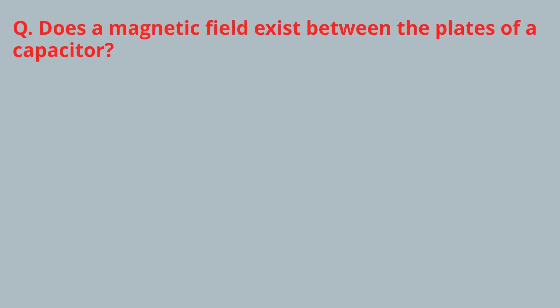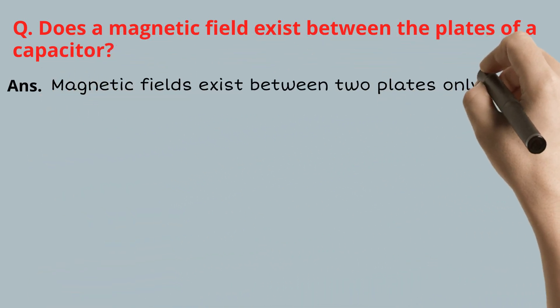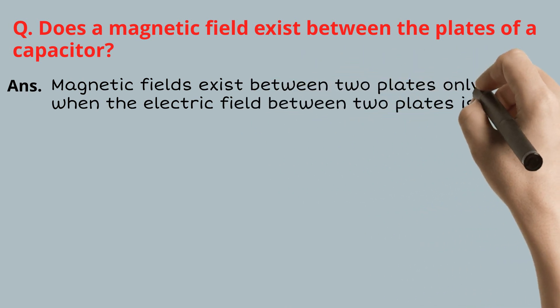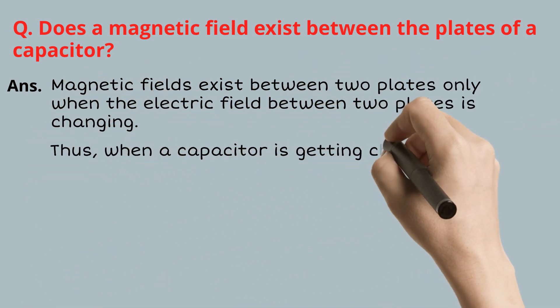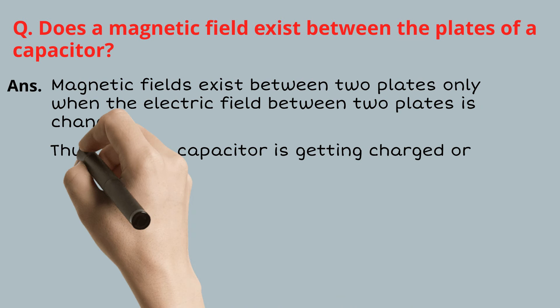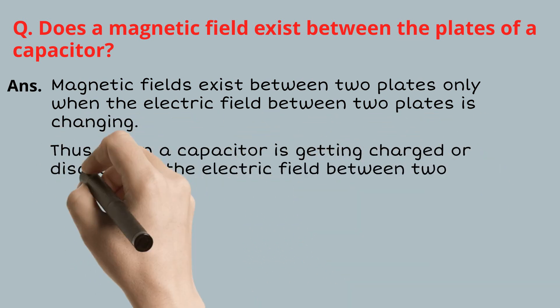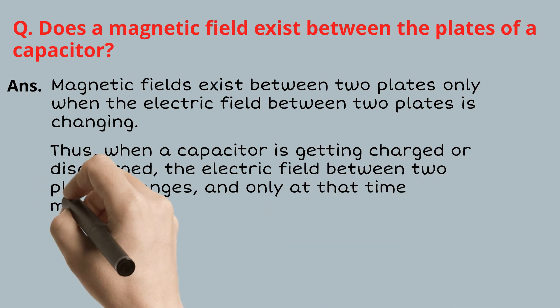FAQ: Does a magnetic field exist between the plates of a capacitor? A magnetic field exists between two plates only when the electric field between them is changing. Thus, when a capacitor is getting charged or discharged, the electric field between two plates changes, and only at that time does a magnetic field exist.